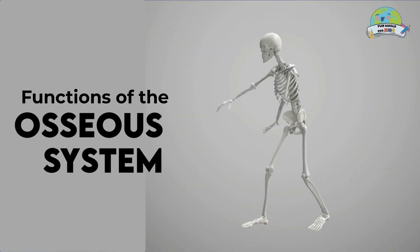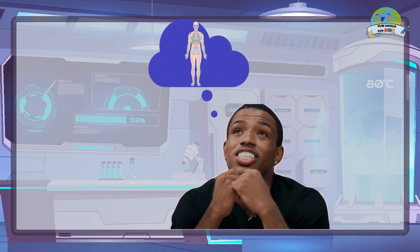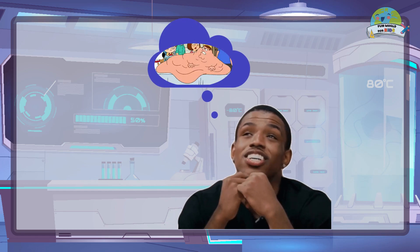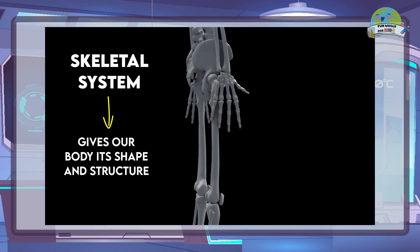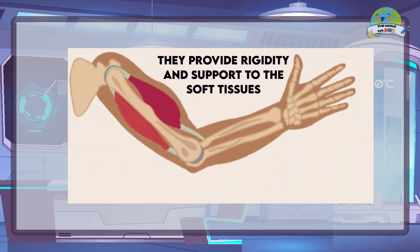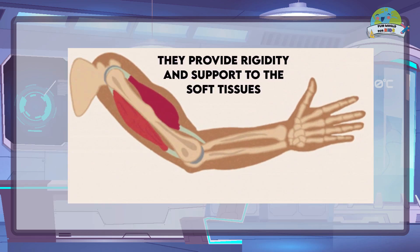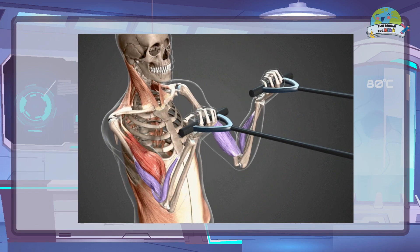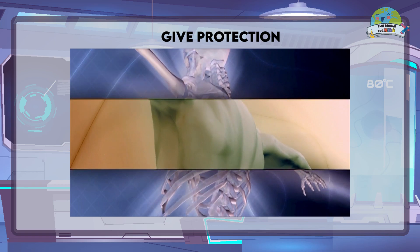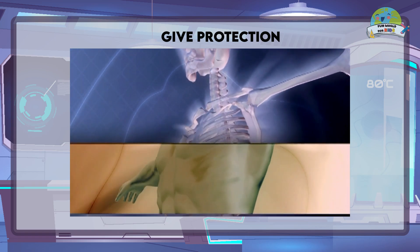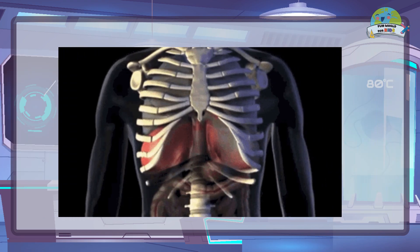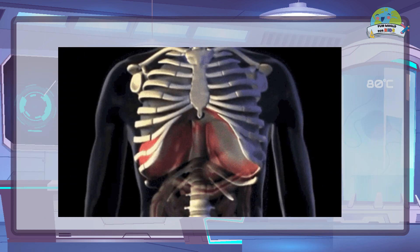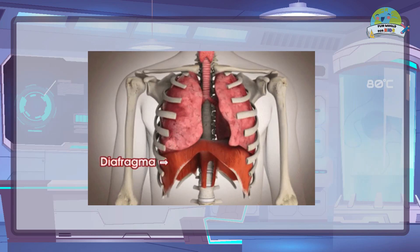Tendons. Functions. Can you imagine if we didn't have a skeleton? We would be a mass of skin and organs without the ability to move. Thanks to our skeletal system, our body maintains its shape and structure. They provide rigidity and support to the soft tissues, keeping everything in its respective place. They give protection — being hard and inflexible pieces, the bones serve as an internal shield, such as the ribs, which prevent damage to our lungs, heart and large blood vessels of the thorax.